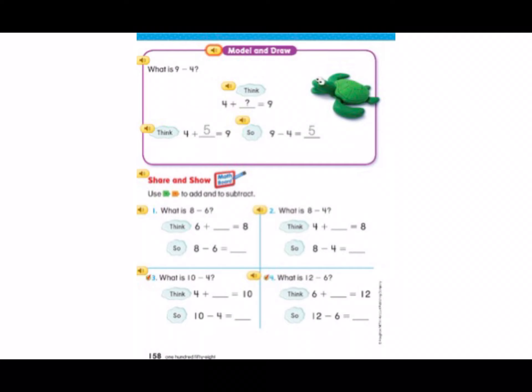Okay, let's go on and keep practicing. Look in the top purple box. What is 9 minus 4? Think, what number can I add to 4 to equal 9? 4 plus 5 equals 9. So, 9 minus 4 equals 5.